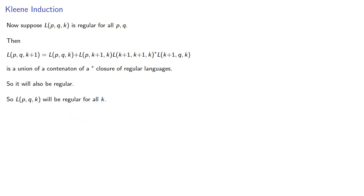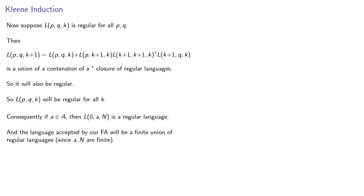Consequently, if A is an accepting state, then L(0,A,N) is a regular language, and the language accepted by our finite automaton will be a finite union of regular languages, since A and N are assumed finite, and so it will also be a regular language.